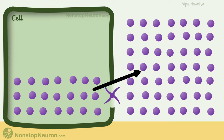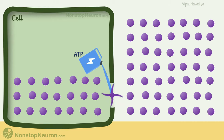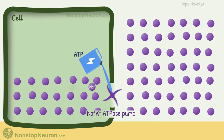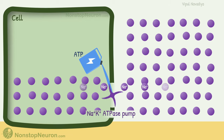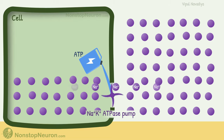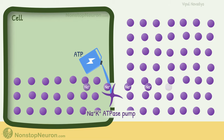Here, active transport means moving molecules against an electrochemical gradient — it is like uphill movement. In primary active transport, energy comes directly from ATP or other high energy compounds. For example, movement of sodium from inside to outside of the cell by the sodium-potassium-ATPase pump. This pump takes energy directly from ATP and uses it to move sodium against its electrochemical gradient. So this is primary active transport.